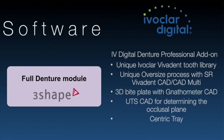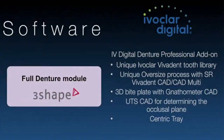The Ivoclar add-on is an additional software package that allows you to do quite a few things — essentially digital BPS, nathometers, and gothic arch tracing, plus an oversized milling process. You get super accurate dentures once you've finished milling. It's a very accurate and predictable way to get wonderful results.